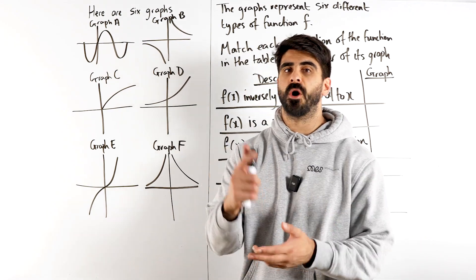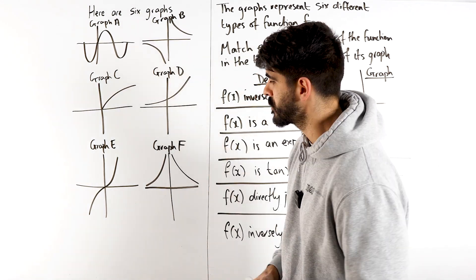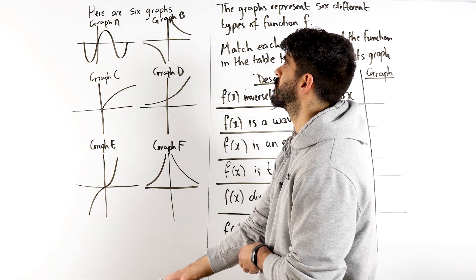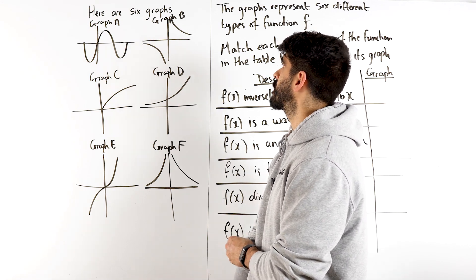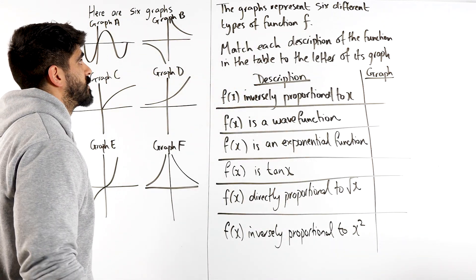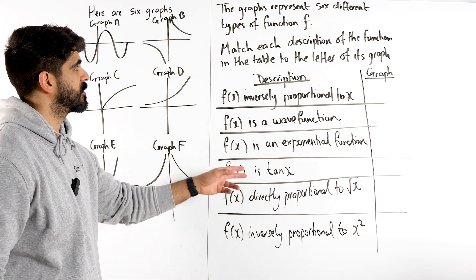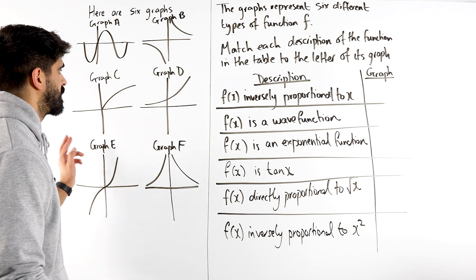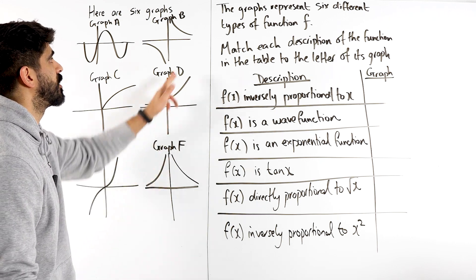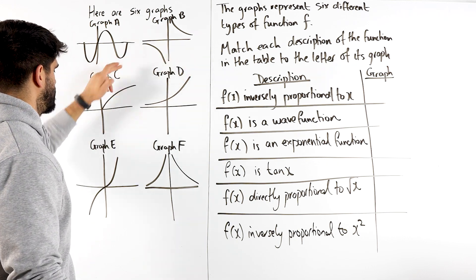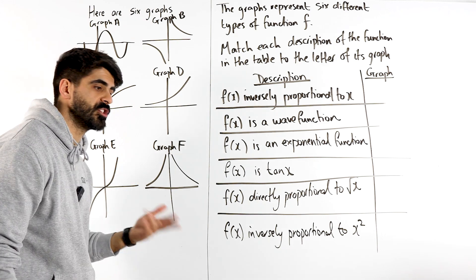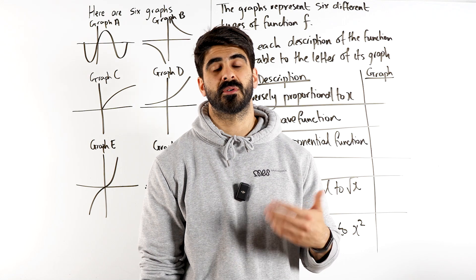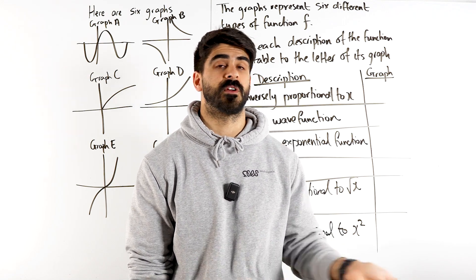Here we have an incredibly popular GCSE question to do with graphs. I'm basically trying to cover all bases here. Usually they do four graphs, but I'm going to do six because you guys deserve an extension question. It says here are six graphs. The graphs represent six different types of function f. Match each description of the function in the table to the letter of its graph. Now there are some graphs here that you just need to know, but I'm going to teach you the thinking process behind things, because maybe they'll give you a random graph and you have to use the process of elimination to figure out which one it is.